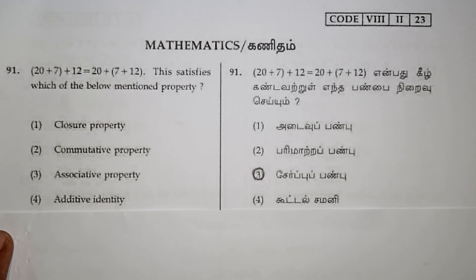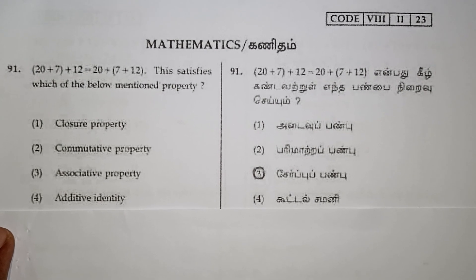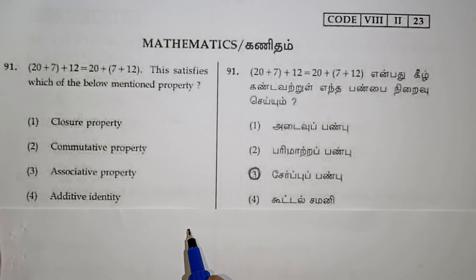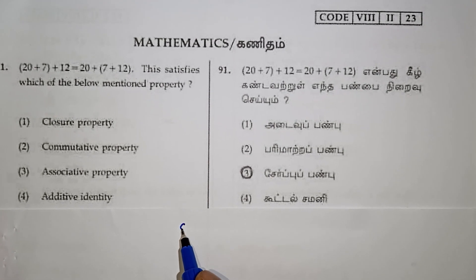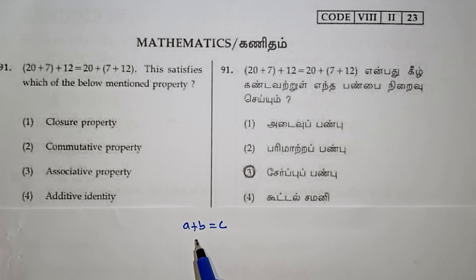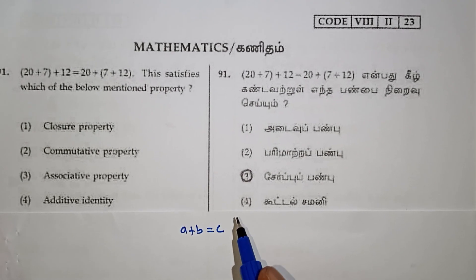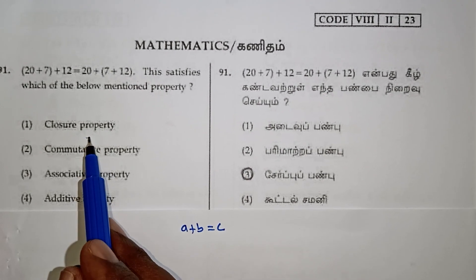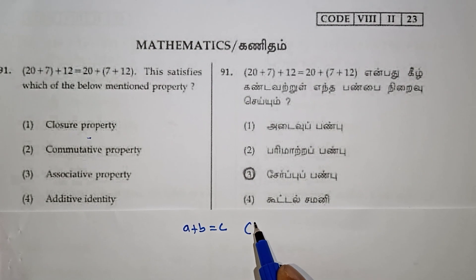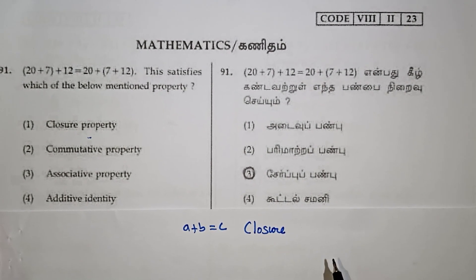There are four basic properties. For the associative property, three elements are used. When you add 2 rational numbers using 3 elements, that is the associative property. The answer to this question is the associative property.